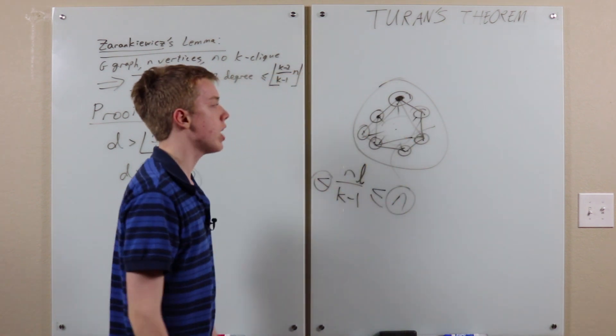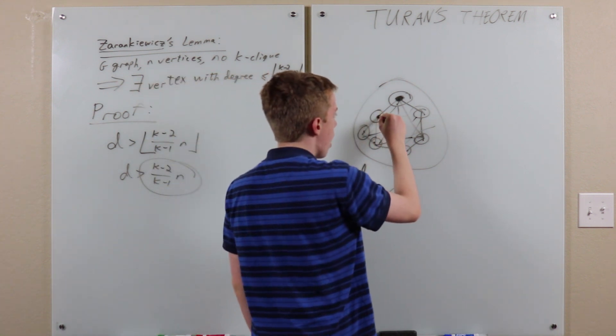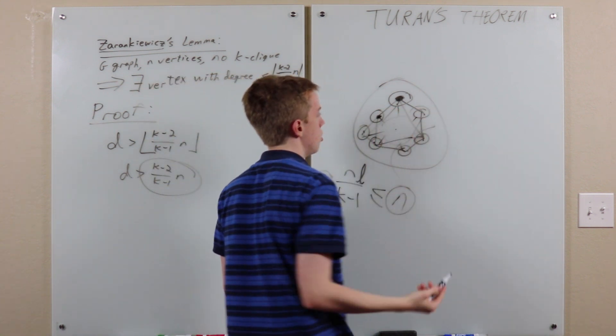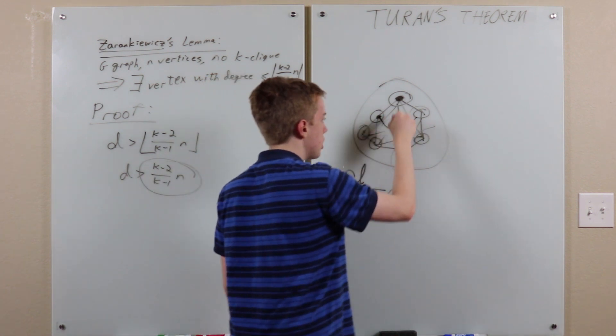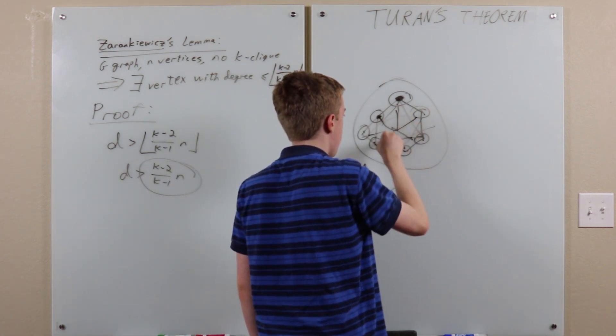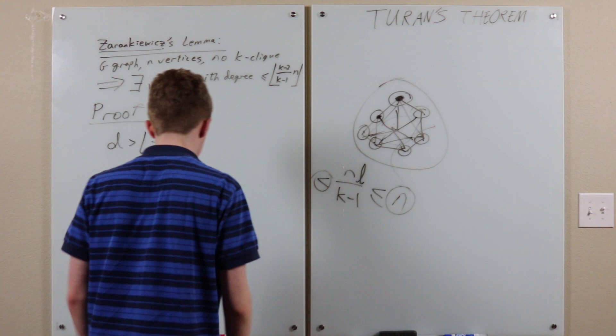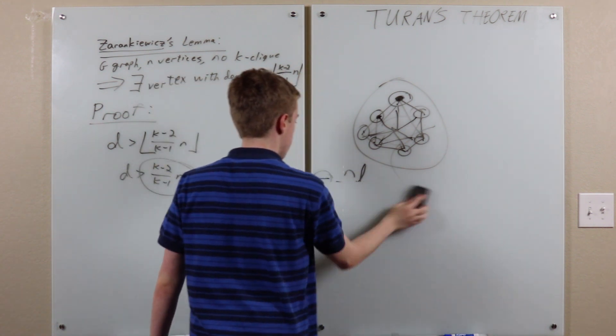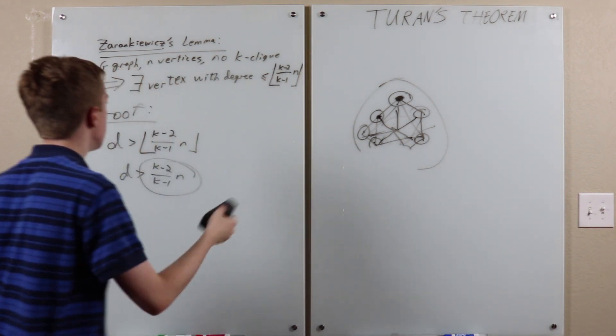And this must be a new vertex, because if it were any of these, then we would have to have an edge from a vertex to itself, which is not allowed. So, we must be able to add one on, which is that, so we've proven that. Like, assuming this. But now,